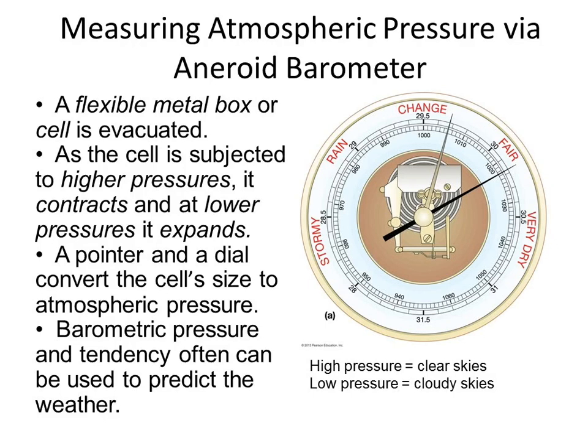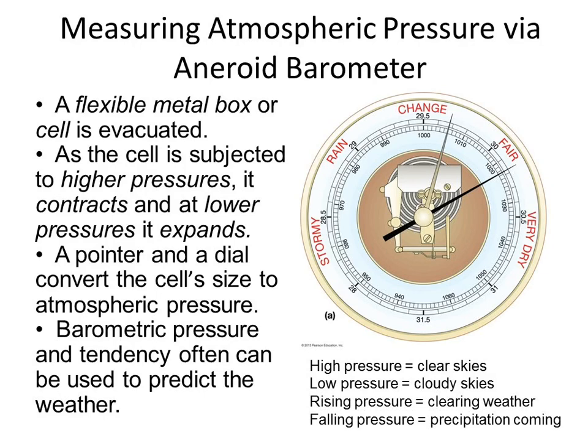High pressures bring clear skies. Low pressures bring stormy or cloudy skies, if not precipitation. We'll look at weather maps to see if the L is indeed cloudy and the H is clear skies. On your weather log, you've been recording the tendency — whether pressure is rising, falling, or steady — and that gold needle is what you use to track it.